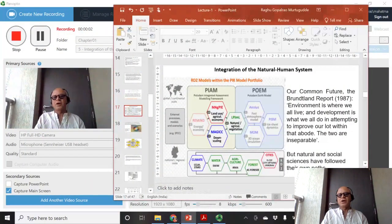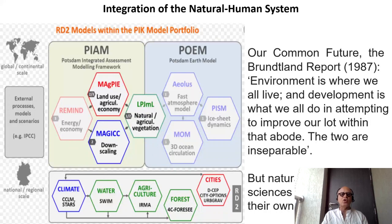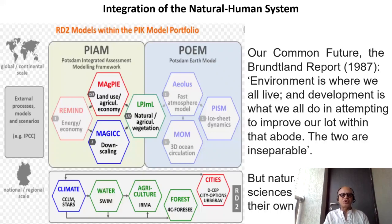Now it comes down to integration of natural human systems and the tools used for doing this. All the IPCC reports, especially till the last one, had some aspects of human impacts on the system, but not a complete societal model or human dimension — more like the Brotherton diagram, which we call system models.